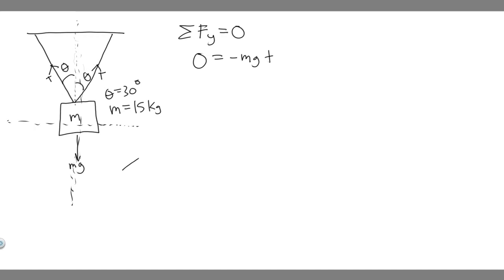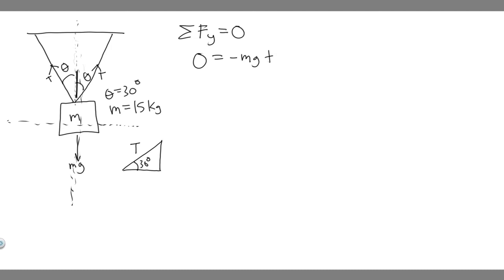The way we find the y-component is by using trig. Let me draw this triangle. This triangle represents the string's geometry — this angle is 30 degrees. The longest side is the tension force T, which is the hypotenuse. We're trying to solve for this side — the vertical part — which is adjacent to the angle. So we label it y, the vertical component of T.